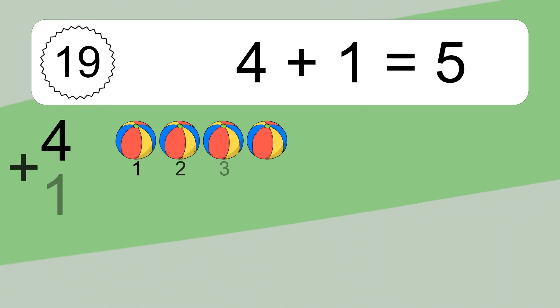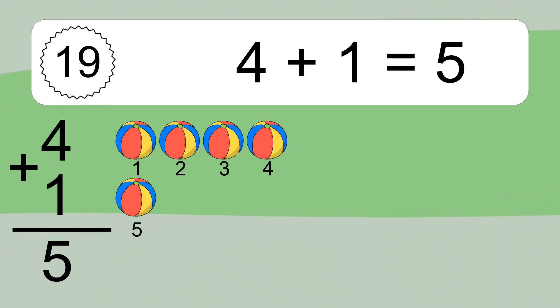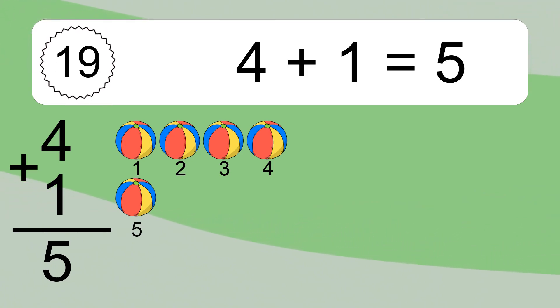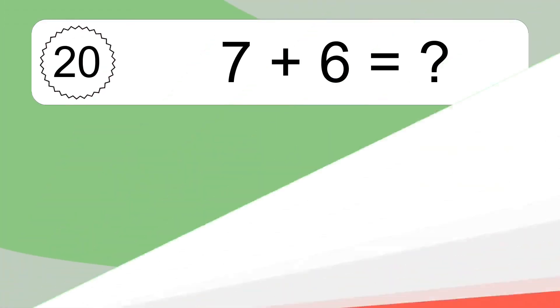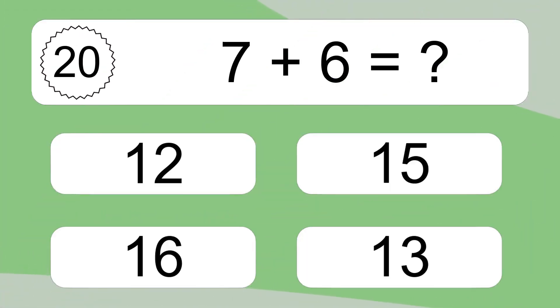4 plus 1 equals 5. Let's count it: 1, 2, 3, 4, 5. 7 plus 6 equals what?